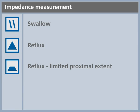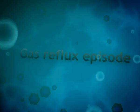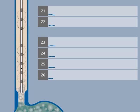We will now explain the impedance pattern of a gaseous reflux. Air is released from the stomach. This is a belch. When air touches two rings of a channel, the impedance increases.